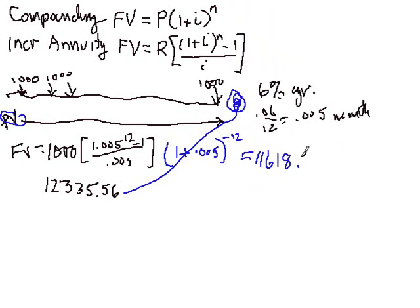So what we've found then is that this series of $1,000 payments each month for a year is really equivalent to a lump sum contribution of $11,618 today. Let's see if we can put this whole idea together here.